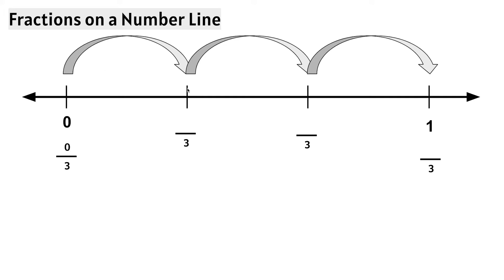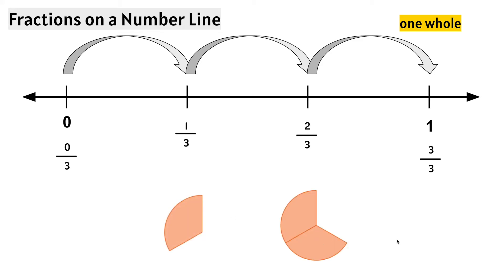When we jump over, this tick mark represents 1 third. When we jump to the next tick mark, it represents 2 thirds. And when we jump one more tick mark, we can say 1 — we can also say 3 thirds is the same thing as 1 whole. So the sequence is: 0 thirds, 1 third, 2 thirds, and 3 thirds — 3 thirds makes 1 whole.